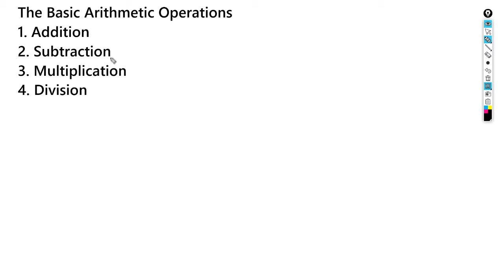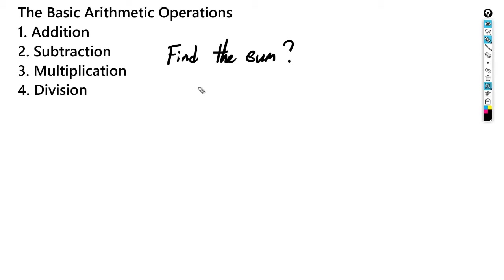Hey guys, what's up. Today we're gonna be looking at the basic arithmetic operations. The first one is addition. We're gonna be adding numbers, and to add means to find the sum. So we're gonna find the sum of these two numbers. We're gonna use seven plus nine, and we need to find the sum of these two numbers. If we add seven and nine we should get 16.